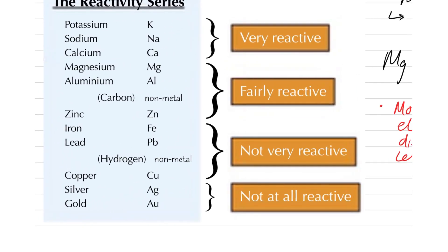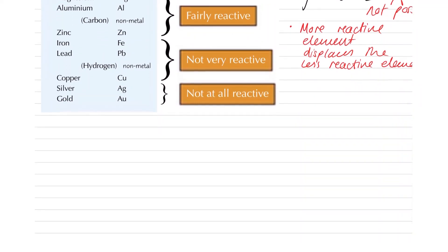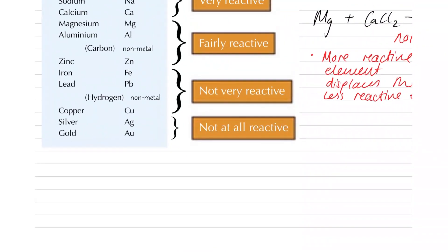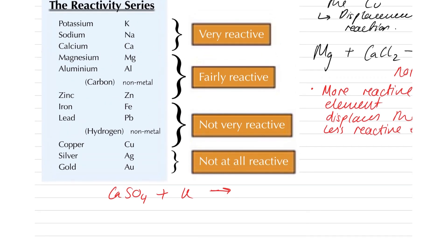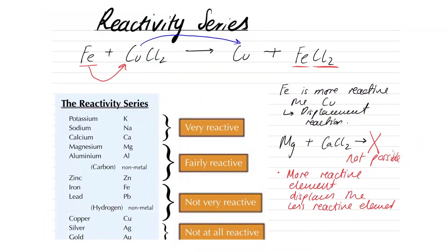This is the reactivity series, and we can use it to decide which compounds can undergo displacement reactions. Let's look at another example — calcium sulfate plus potassium. Will this reaction happen? We have to check: is calcium more or less reactive than potassium? Well, potassium is more reactive, so this reaction will happen. So far we've looked at what the reactivity series is, where reactions are feasible, and how to determine which metal to use to extract a different metal.